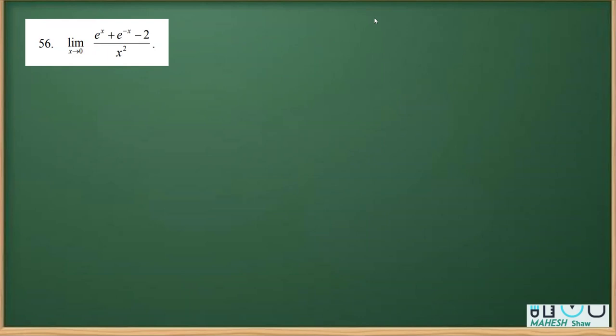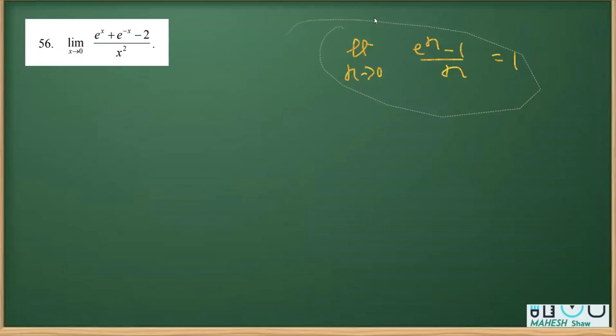In such cases, we need to take steps to remove this 0 by 0 form and get a finite value. Most questions like this are evaluated using the standard relation: limit x tends to 0 of (e raised to the power x minus 1) over x is equal to 1.